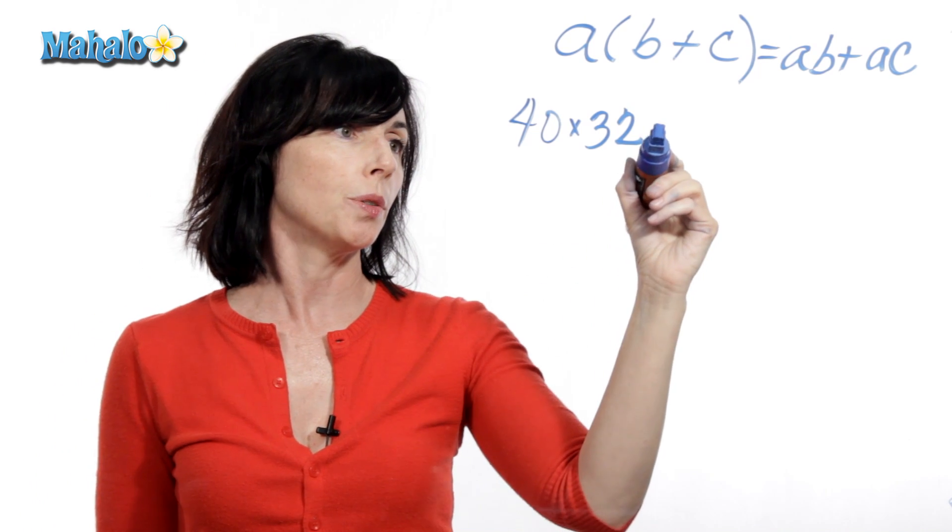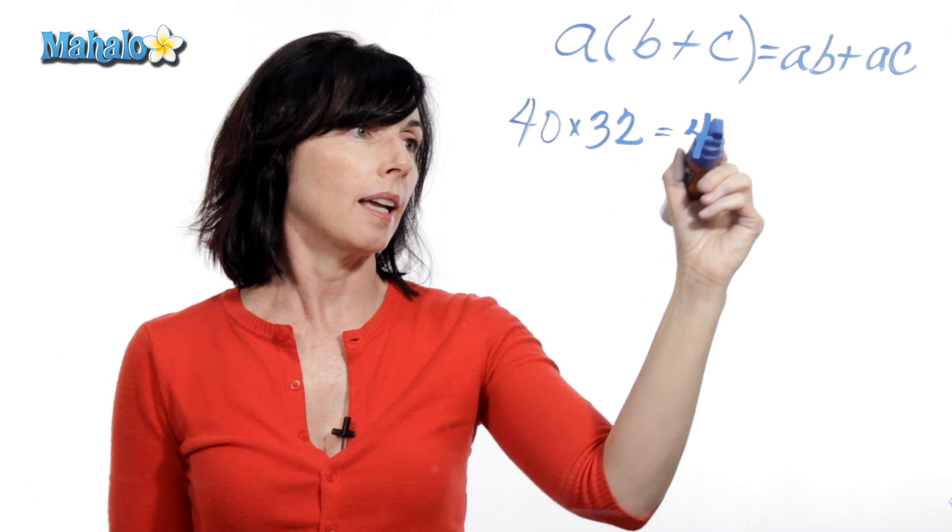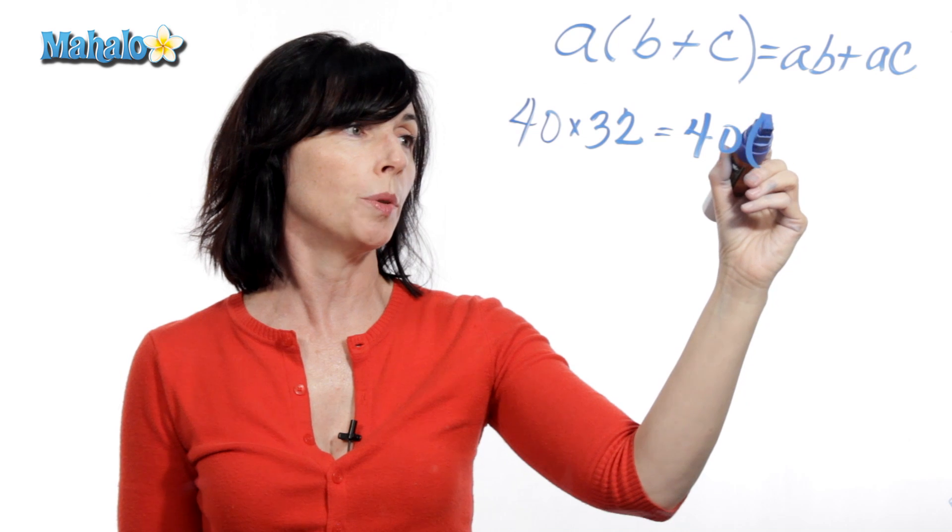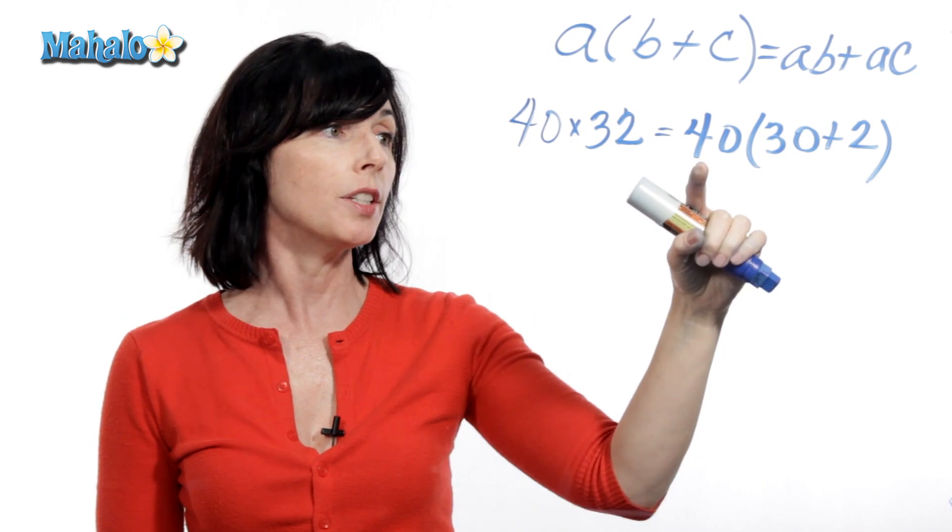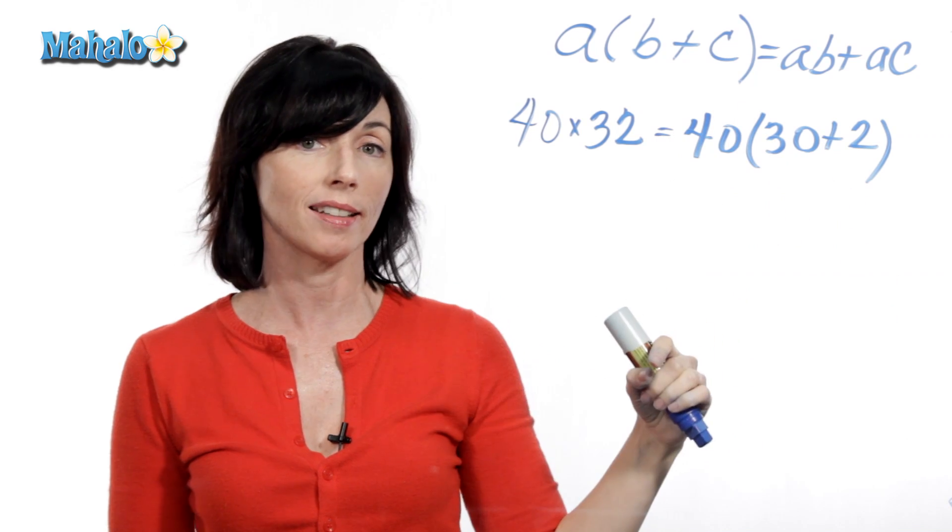Instead of 32, let's write it like this. 32 is just equal to 30 plus 2. So now, let's use the distributive property to calculate it.